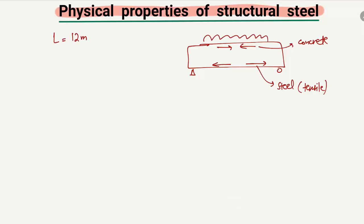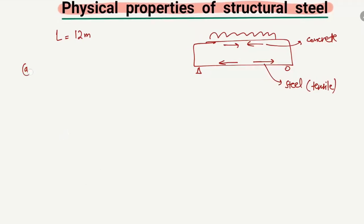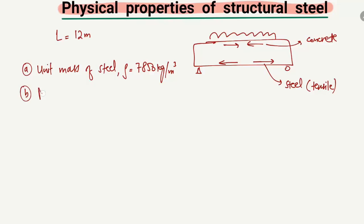Structural steel is provided in any flexural or bending member in order to take the tensile stresses. We should know about its physical properties. The first important property is the unit mass of steel. The unit mass of steel, represented by rho, is equal to 7850 kilograms per cubic meter. This is the density of structural steel or reinforcement.